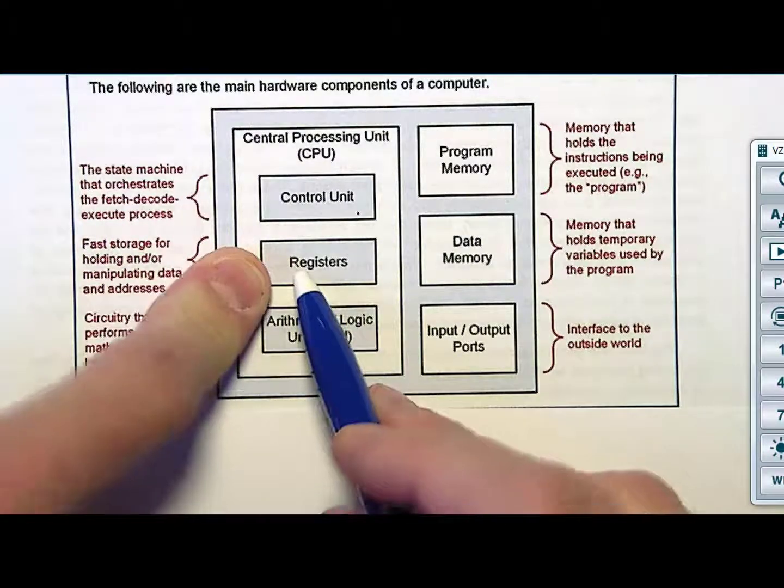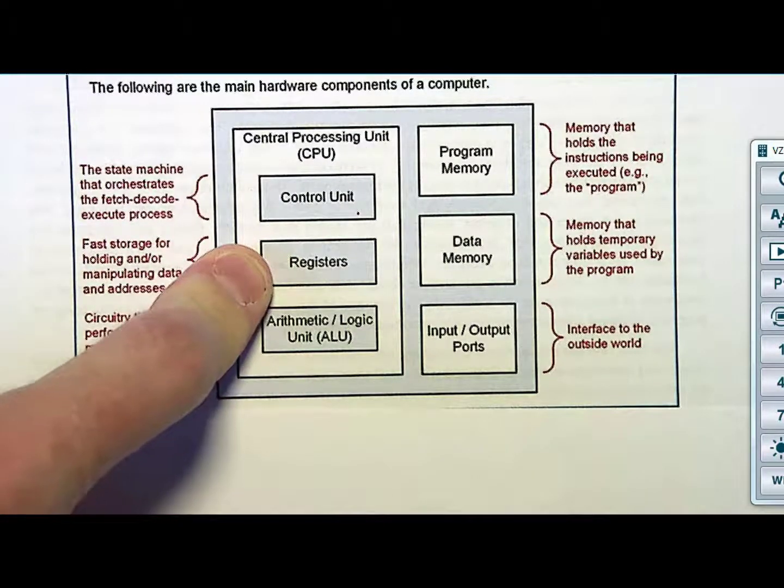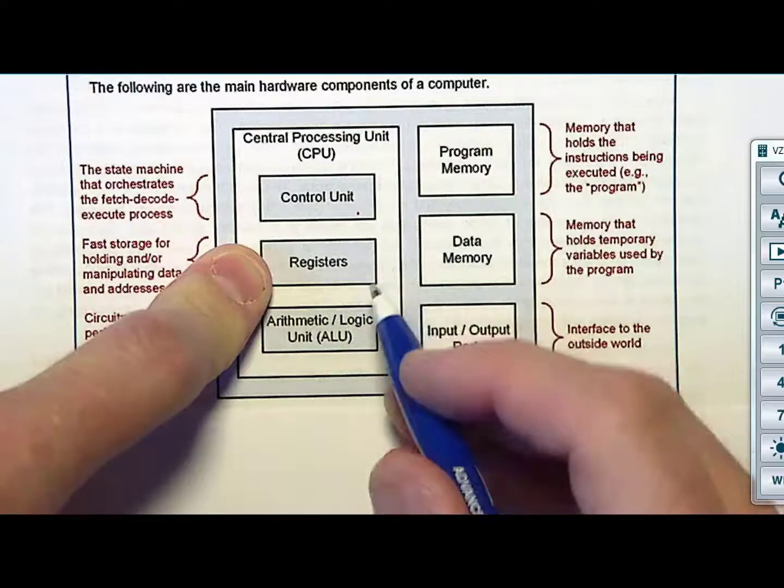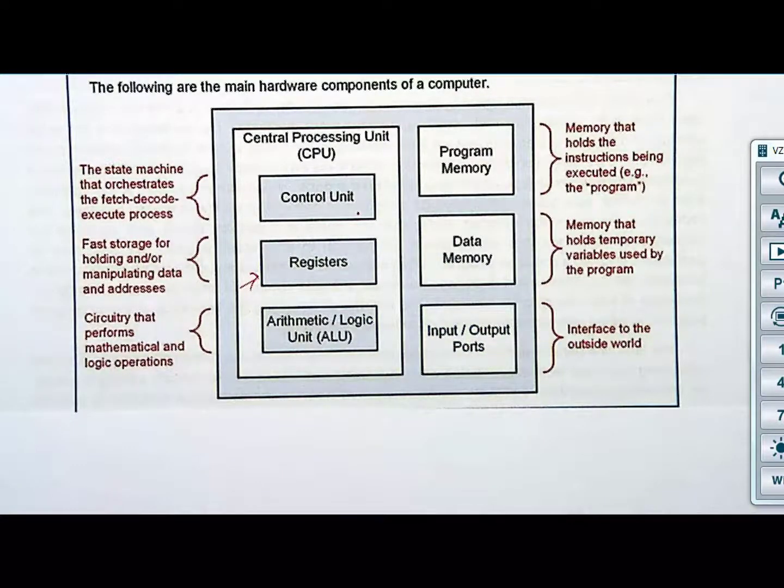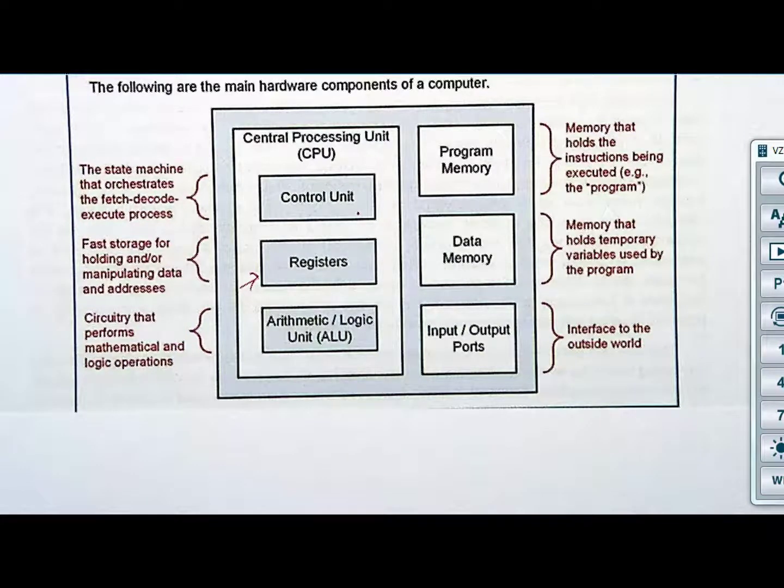We also need storage next to the finite state machine. Because we're going to be bringing information over. For example, we're going to bring an opcode over into this part right next to the finite state machine. We need to grab it and hold it so we can decode it. So, we know we need at least some storage. At a minimum, we need one register just to hold the operation. And then, we'll also have some other storage over there. But this storage that sits right next to the finite state machine, register. It's just like the VHDL registers that we've been doing. 8-bit, 16-bit. Just registers.